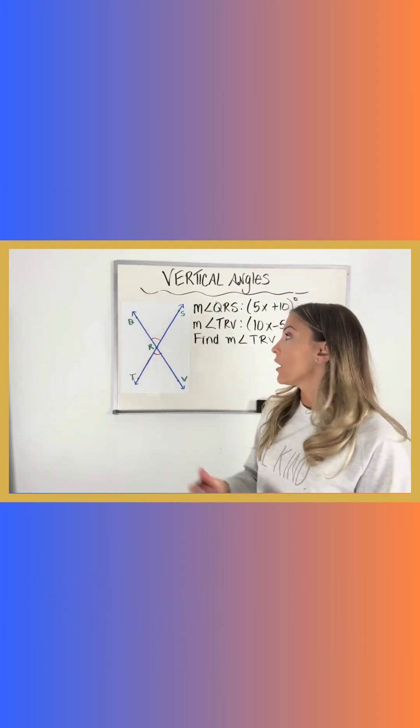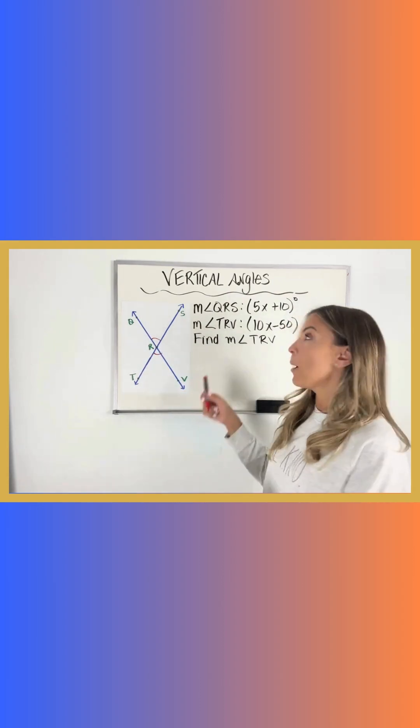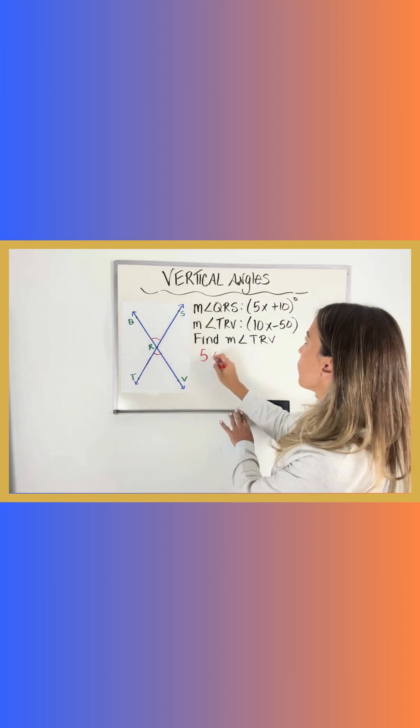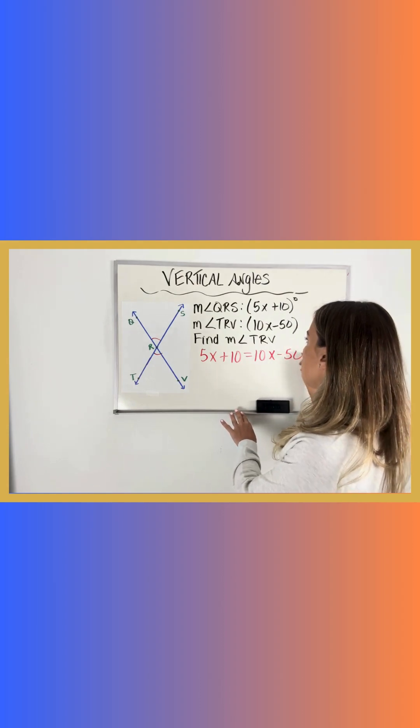So now I start to set up my equation. If I know that these two angles are equal to each other, then that means I could set their expressions equal to each other to make an equation. So I know that 5x plus 10 is equivalent to 10x minus 50.